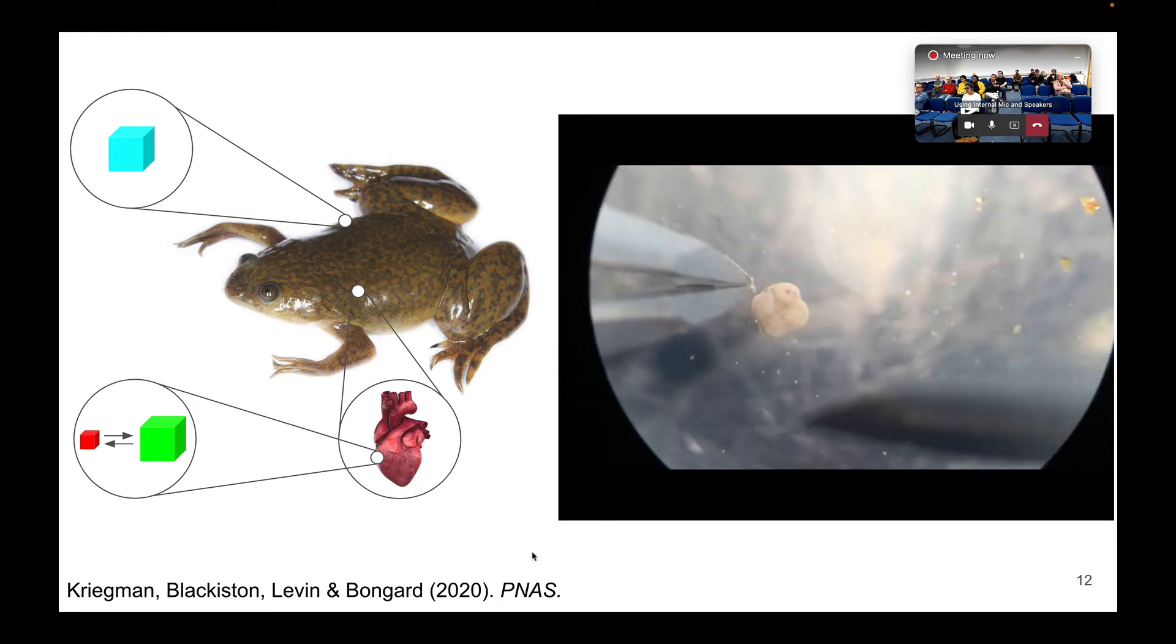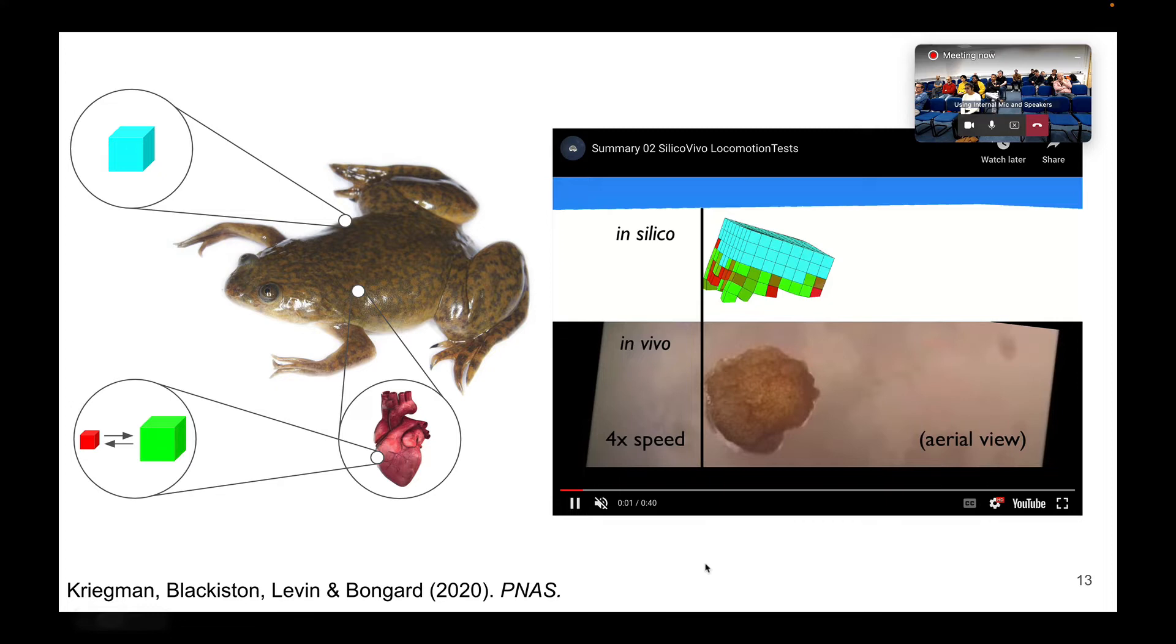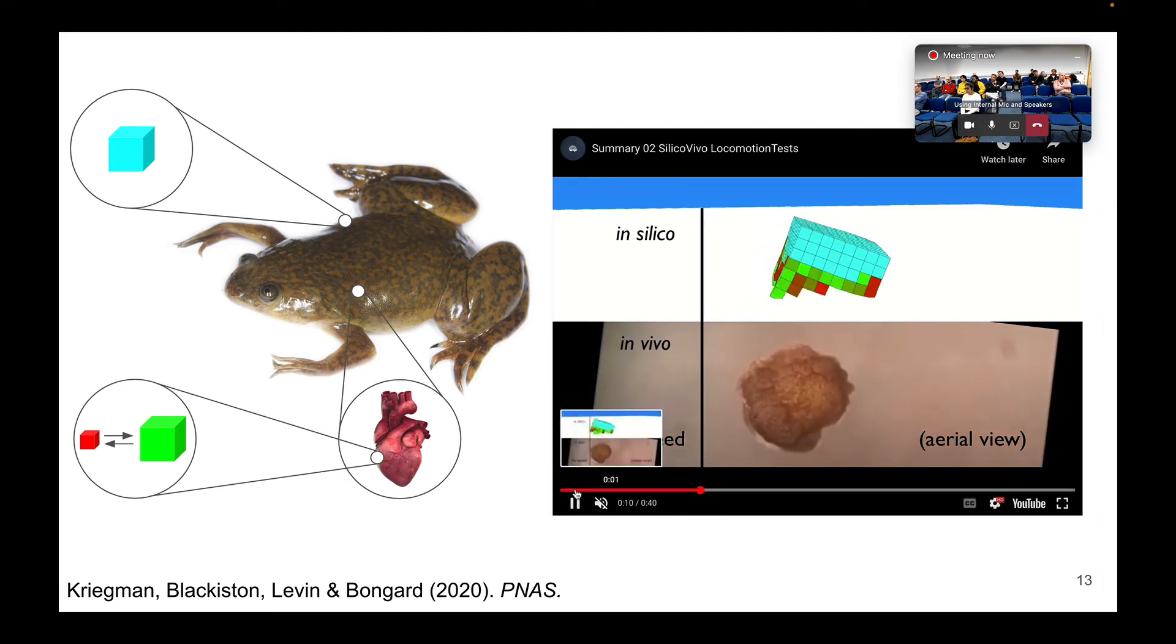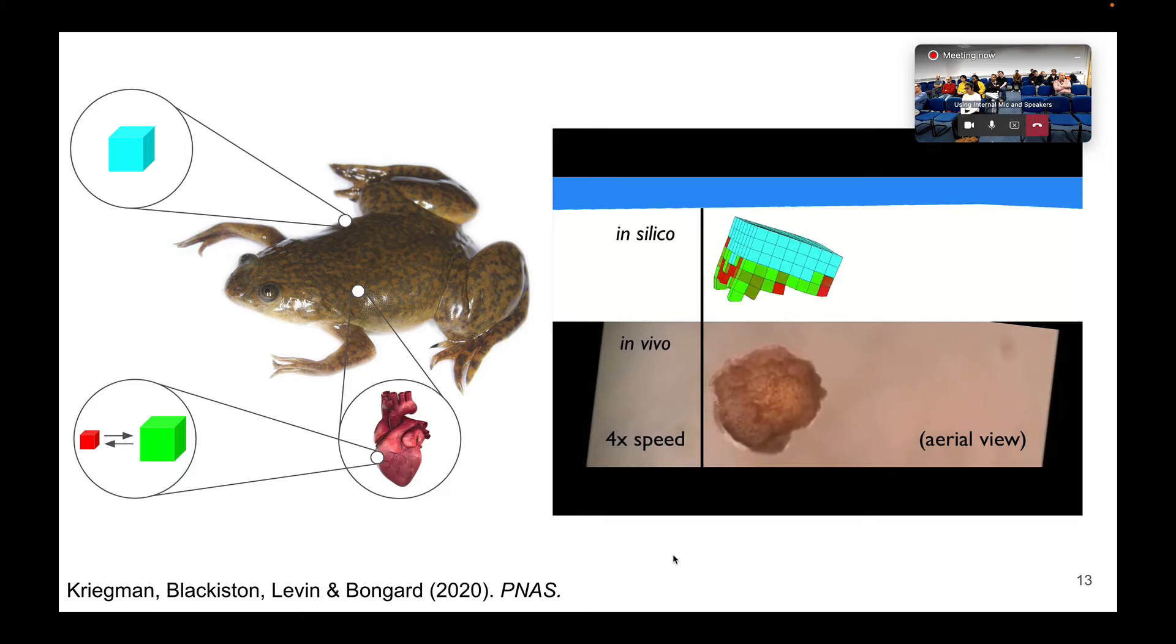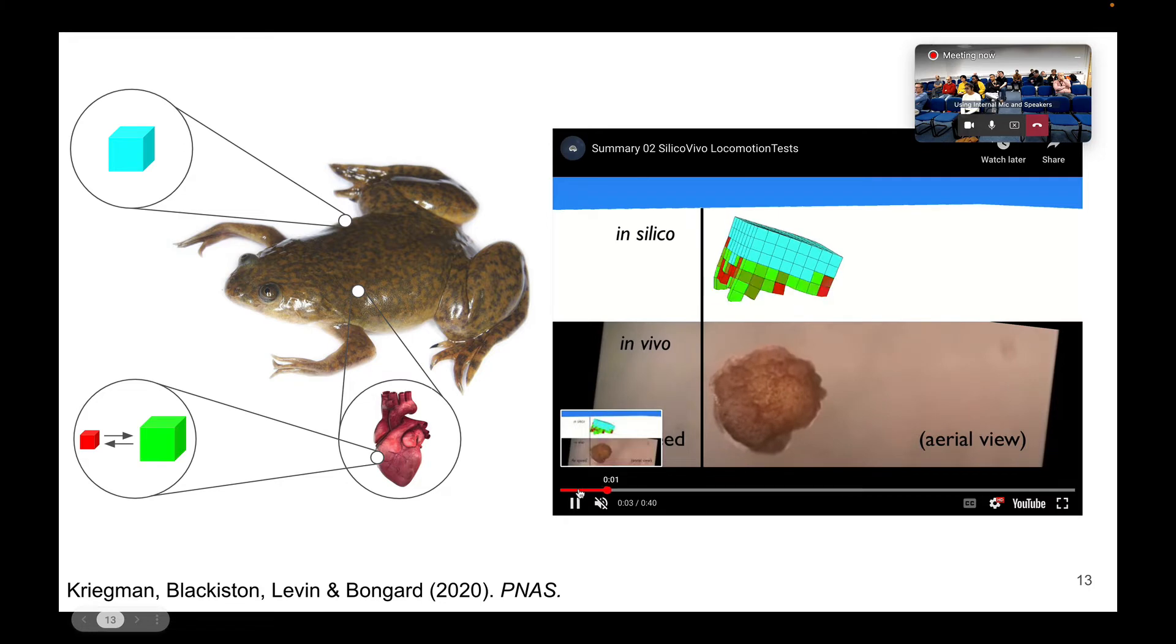I wouldn't be telling you about this project if we weren't successful in crossing the sim-to-real gap. It took us a fair bit of work, but here's a successful attempt. You can see the manufactured bot in the bottom. Although it doesn't quite have exactly the same 3D shape and doesn't move in exactly the same way as the evolved solution in silico, it's close enough. This is better than chance. It's not just a result of the spontaneous action of myocardiac tissue. We've retained some of this evolved form and function into the physical bot.